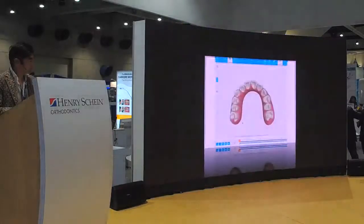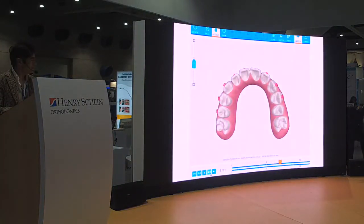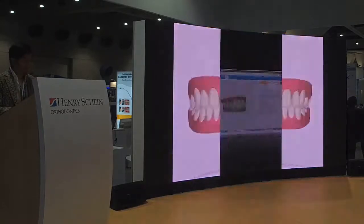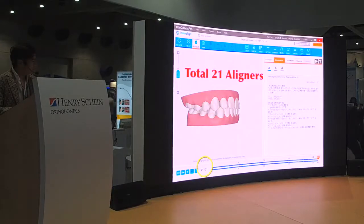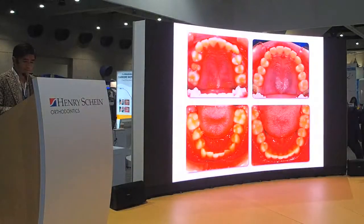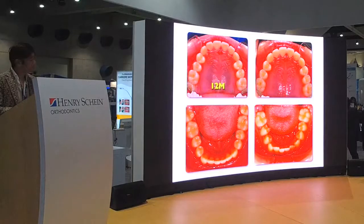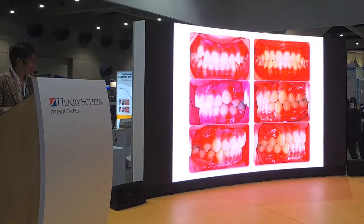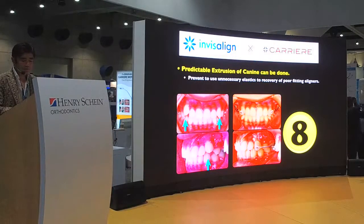Now we proceed with the clean check — this movement is not difficult at all. Very easy. It's a Class 1 canine-premolar relationship, and we just need incisor relationship corrections. With 21 aligners and some refinement stages, the total treatment from start to finish was 17 months. My conclusion is that very predictable extrusion of the canine can be achieved with this motion appliance combination.